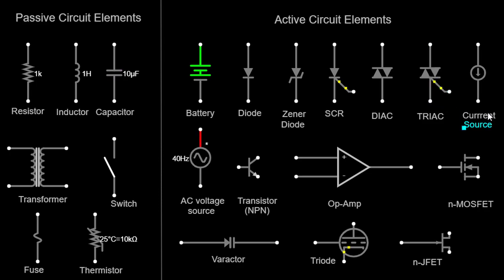Current source. A current source is an active component that provides a constant current output, regardless of changes in the circuit parameters or load. It is represented by a circle with an arrow pointing inward or outward, indicating the direction of current flow.